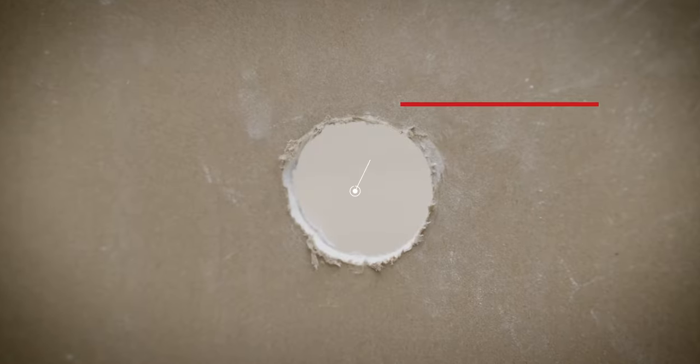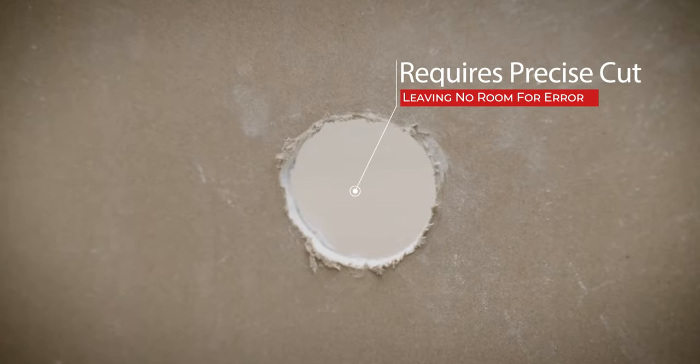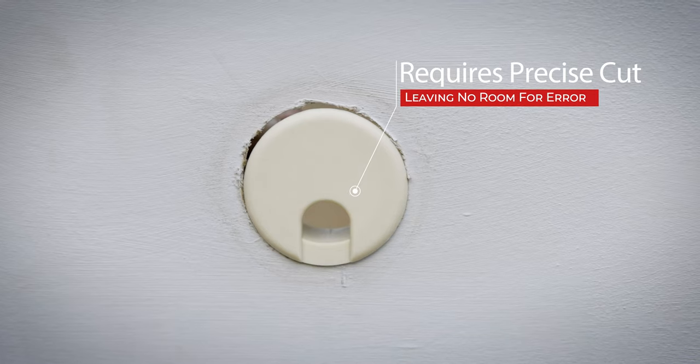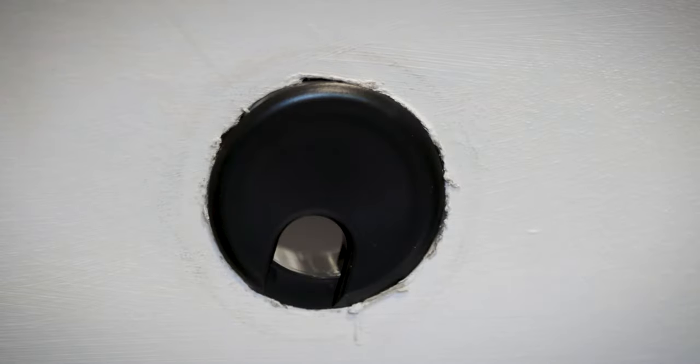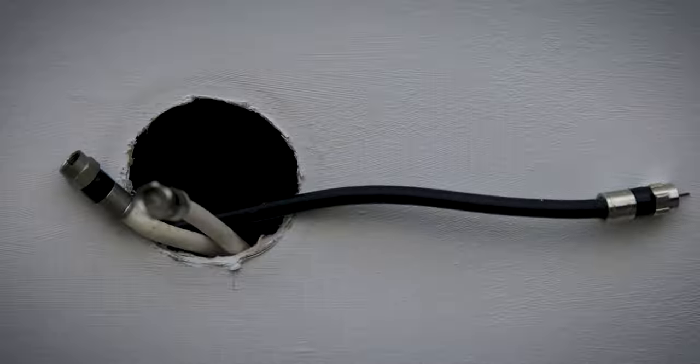Traditional grommets require a hole to the exact size of the grommet, leaving no room for error. They fall out of surfaces after installation and do not fully encase and protect the wires and cables.